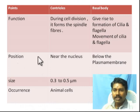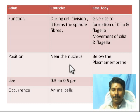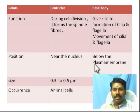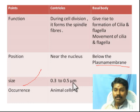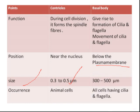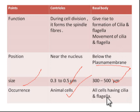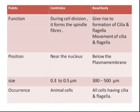Regarding position, centrioles are present near the nucleus because they help in cell division, whereas the basal body lies just below the plasma membrane. Centrioles are always found in animal cells only, but the basal body is present in both prokaryotes and eukaryotes - found in all cells that have cilia or flagella. This is the main difference between centrosome and basal body.